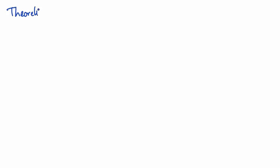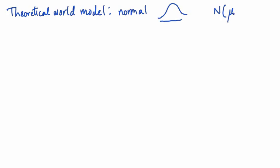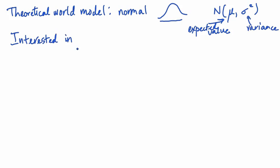Let's now look at another case. Suppose our theoretical world model is a normal distribution. The normal distribution is a good model for quantitative data in many cases. A normal distribution has two parameters: its expected value mu and its variance sigma squared, or equivalently its standard deviation sigma. For now, let's say the parameter we're interested in is mu, the expected value. If our data are observations from this normal distribution, a natural choice to estimate the expected value is the average of our data values.